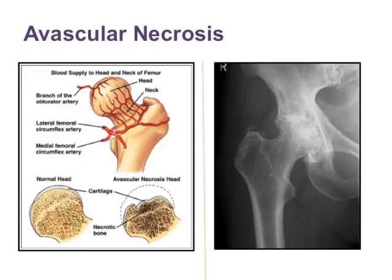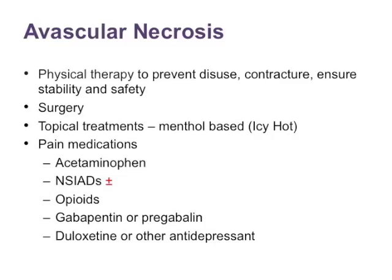Avascular necrosis is in part due to changes in blood supply, often from steroids, and frequently affects the head of the femur — you sometimes see this in baseball players or other sports figures who, of course, are not using steroids. The head of the femur deteriorates, similar to needing a hip replacement, and can be exquisitely painful due to instability or bone rubbing on bone. We use physical therapy, surgery as the definitive treatment which can be extremely helpful, topical treatments, and the same pain medicines we've been discussing.